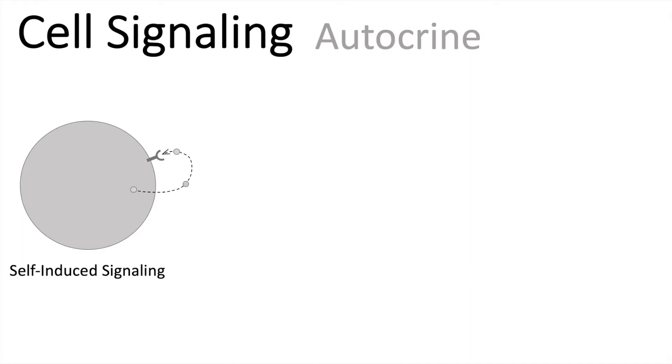We can find many good examples for autocrine signaling when we have a look into tumor cells. Most tumor cells show to be autonomous in terms of cell proliferation. Many of them show to develop independency of their microenvironment. This is why autocrine signaling is found a lot in tumor cells.